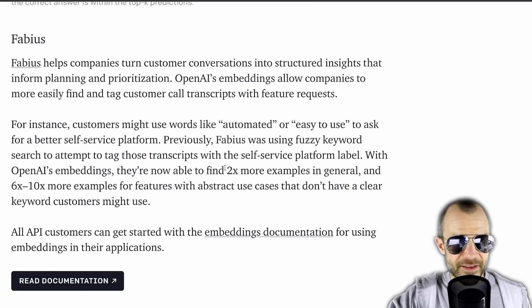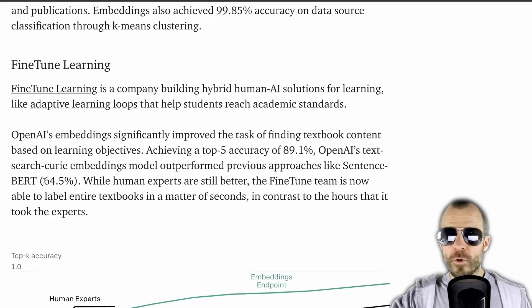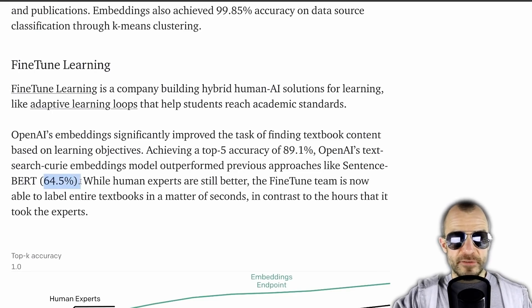Of course, there's no way to verify that. The blog post lists three examples of customers saying they're able to find six to ten times more relevant examples, or they pumped their performance from 64% to 89%. Again, there's no way to verify that — but I wouldn't actually be surprised if that is the case. Real-world data is a lot more messy than any academic dataset, and therefore I guess only trying it out will actually tell you whether it's useful or not.